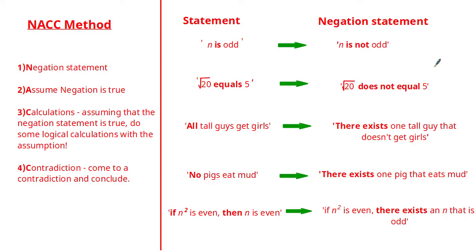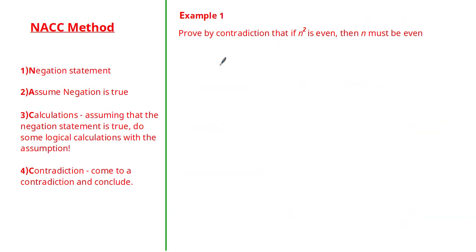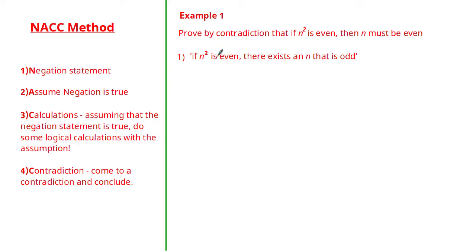Now let's do examples to complete a proof by contradiction. The first example: prove by contradiction that if n squared is even then n must be even. Using the NAC method, the first thing we do is write the negation statement — from the previous slide, the negation is: 'if n squared is even then there exists an n that is odd.' The next step is to write the assumption: assuming the negation is true.